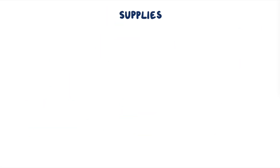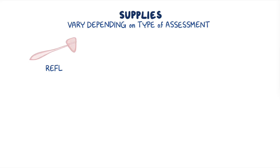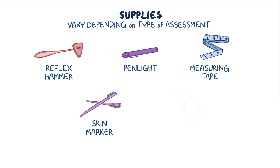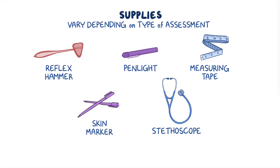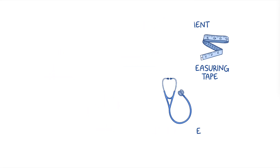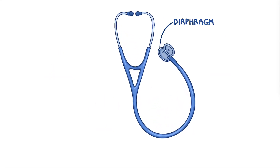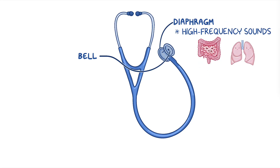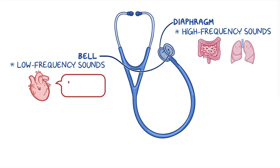The supplies needed for assessment will vary depending on the type of assessment. However, there are a few supplies you will use often, like a reflex hammer, pen light, measuring tape, washable skin marker, and a stethoscope. Your stethoscope should have both a diaphragm and a bell so you can listen for different types of sounds. The diaphragm is used to detect high-frequency sounds, like bowel or lung sounds, while the bell is used to detect low-frequency sounds, like heart sounds.